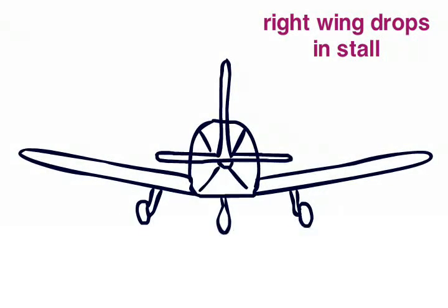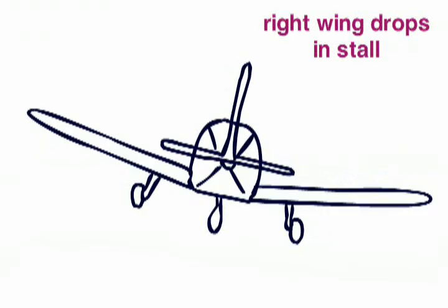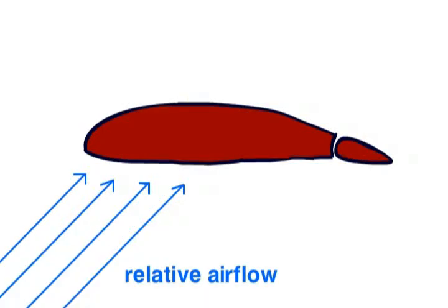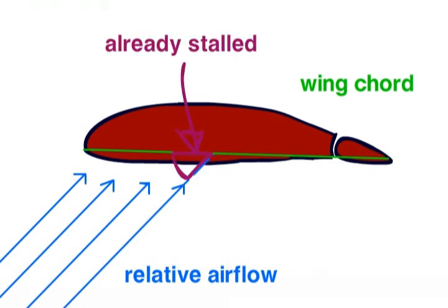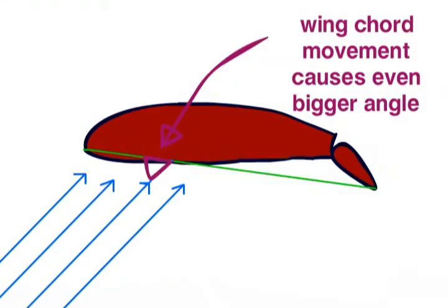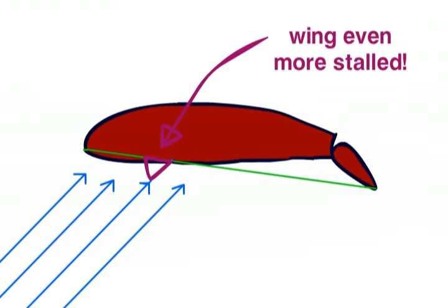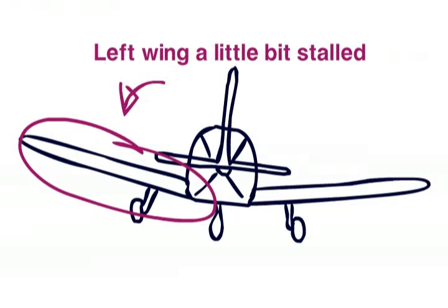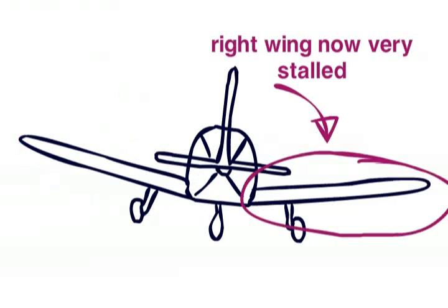Now, imagine that your right wing begins to drop. Your normal instinct will be to use aileron to raise it again, but you are in a stall. Look at what will happen if you use aileron to raise the right wing — yes, you will stall that wing even more, and it will drop suddenly. You will now have one wing pretty stalled and one wing very stalled. This will result in a spin.